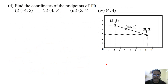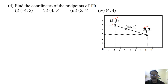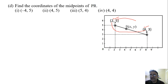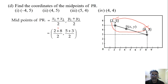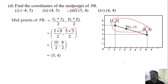Fourth question: find the coordinates of the midpoint of PR. P is (2, 5) and R is (8, 3). Using the midpoint formula: ((x1+x2)/2, (y1+y2)/2) = ((2+8)/2, (5+3)/2) = (10/2, 8/2) = (5, 4). So the correct option is the third option.